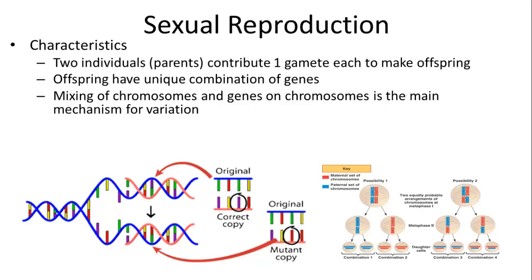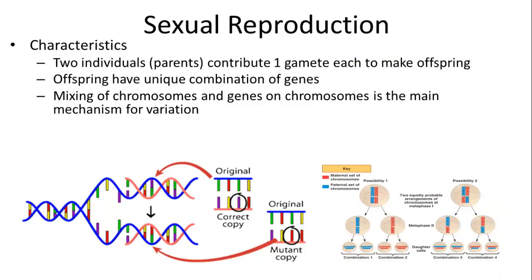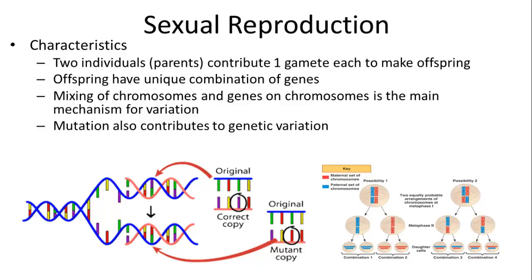This is why my kids don't look exactly like me but look like some combination between my wife and I. Mutation, which also affects asexual reproduction, will also affect sexual reproduction — it's an additive source of variation.